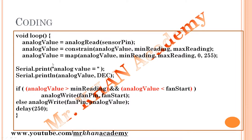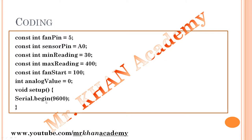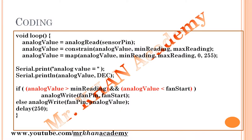Next is `Serial.print`. Since we already defined `Serial.begin`, communication has started and now we can send data to the serial monitor. To print anything on the serial monitor we use the `Serial.print` function. In the brackets I pass the string `"Analog value = "`, which will print as-is. Then `Serial.println(analogValue, DEC)` prints the value stored in the variable on the next line in decimal format. `DEC` is used only for printing in decimal.